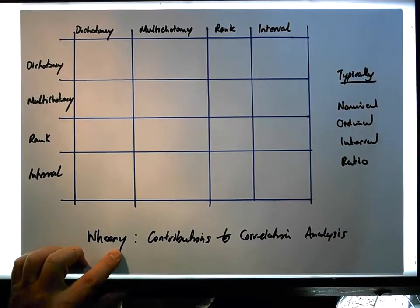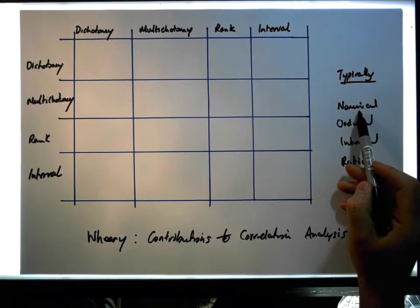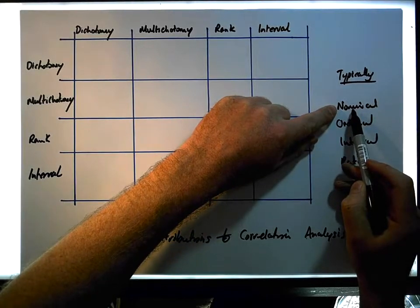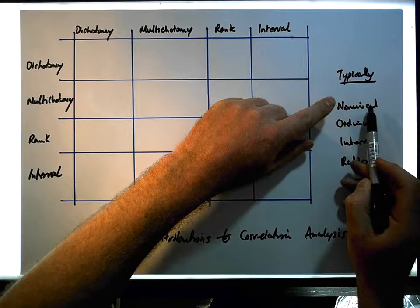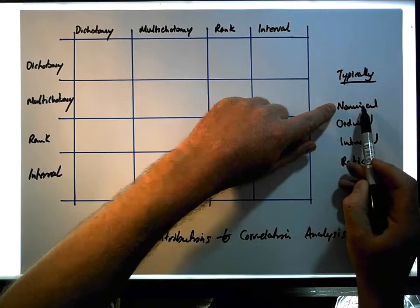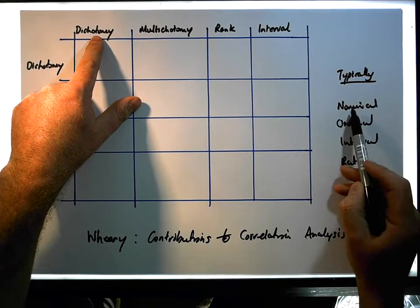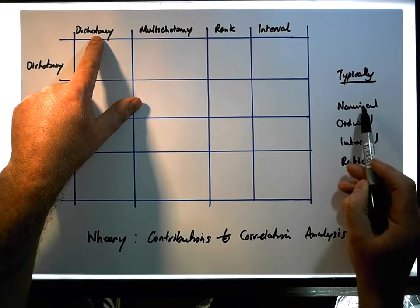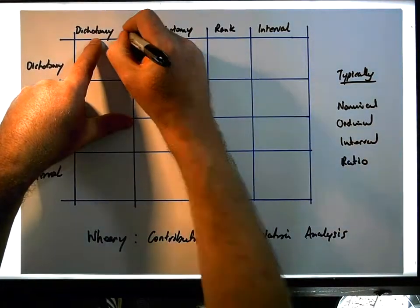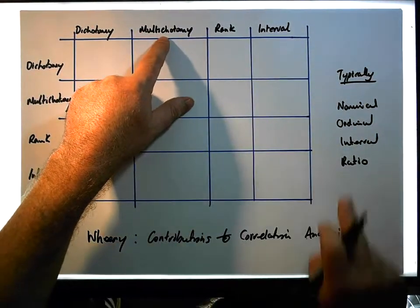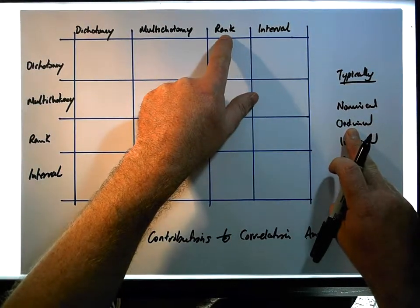In that particular text, Weary subdivides nominal variables into two classes. One where we have just two levels of measurement — a clear dichotomy with respect to the variable — so I'm going to label those as dichotomies (D). And also nominals where there's more than two levels of measurement, which we're going to call multichotomies (M). Ordinal variables in Weary are called rank variables, so we're just going to call them rank here.